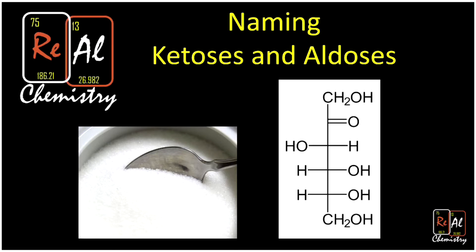What is up, everyone? Today on this episode of Real Chemistry, we're talking about naming ketoses and aldoses. Ketoses and aldoses are both forms of sugar. So you see this table sugar down here. That turns out to be what's called sucrose, just one very particular form of sugar. But anytime you see the ending -ose, you know that you have a sugar. So -ose always means sugar.